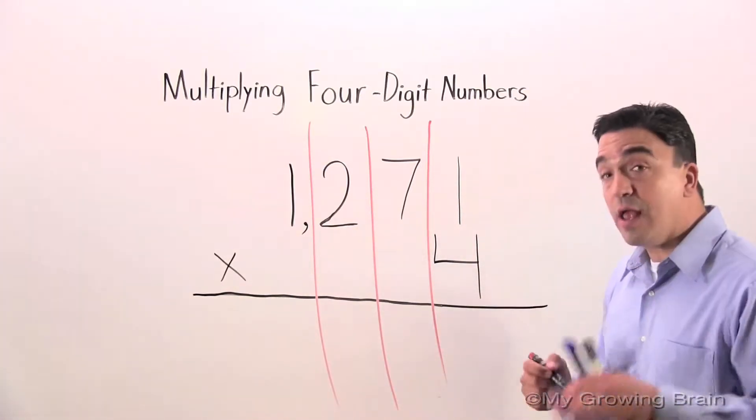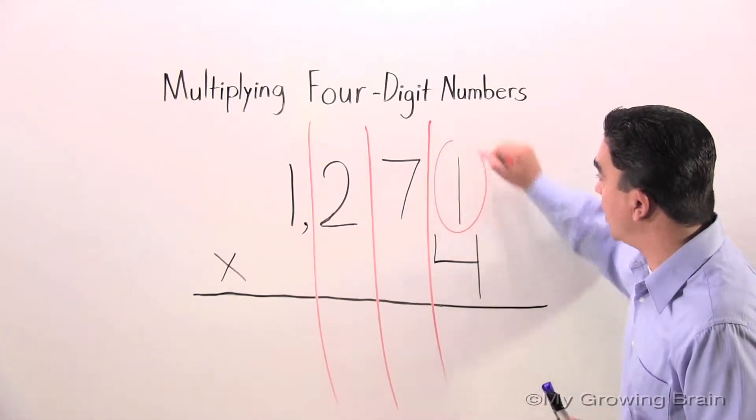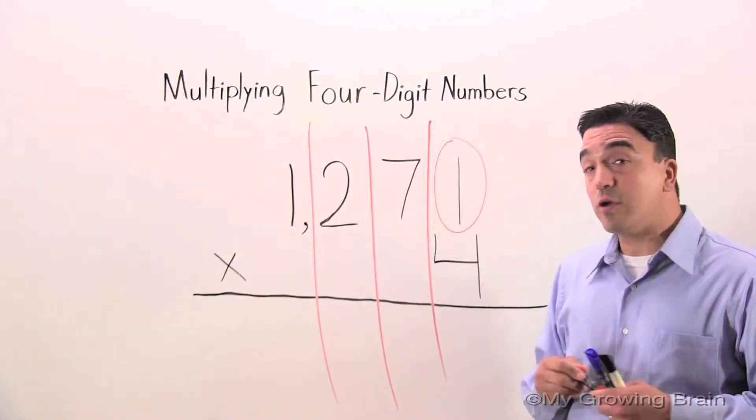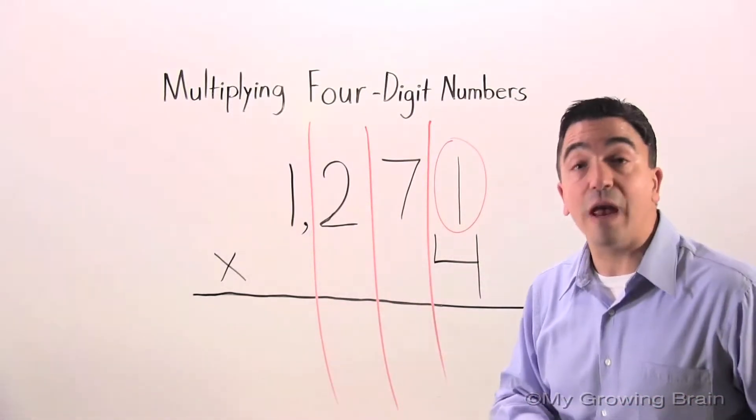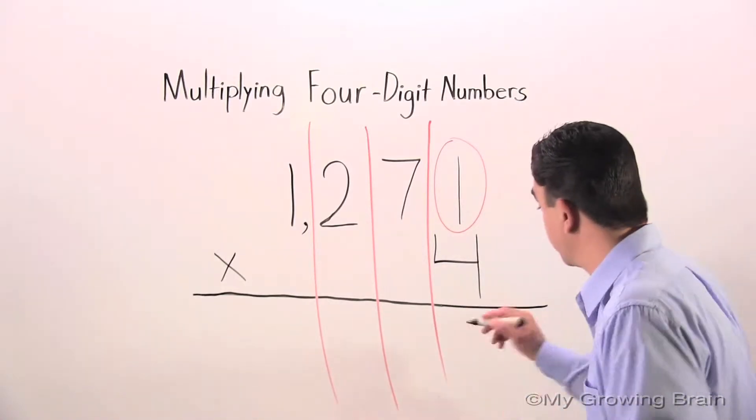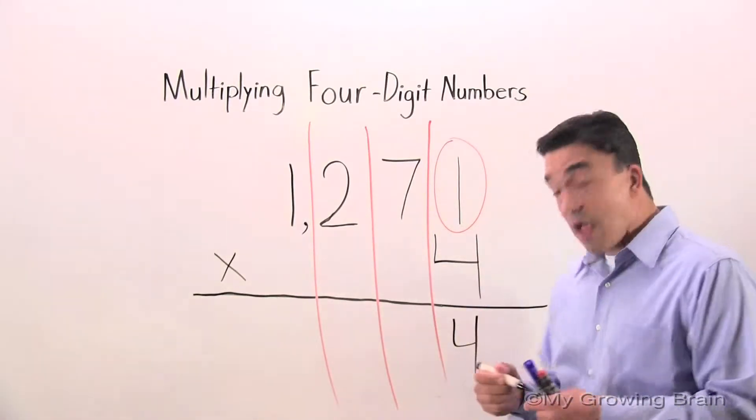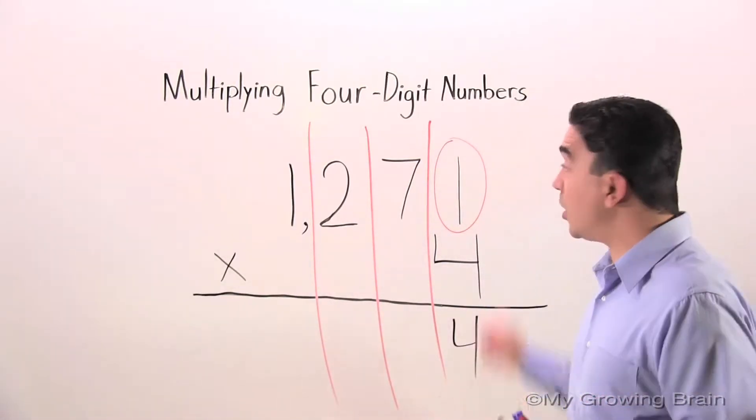So let's go ahead and start over here. And just as a little reminder, I'm going to circle the one. The first thing we're going to do here is multiply four times one. And we all know that. Four times one is four. Since that's a one-digit number, we don't need to regroup.